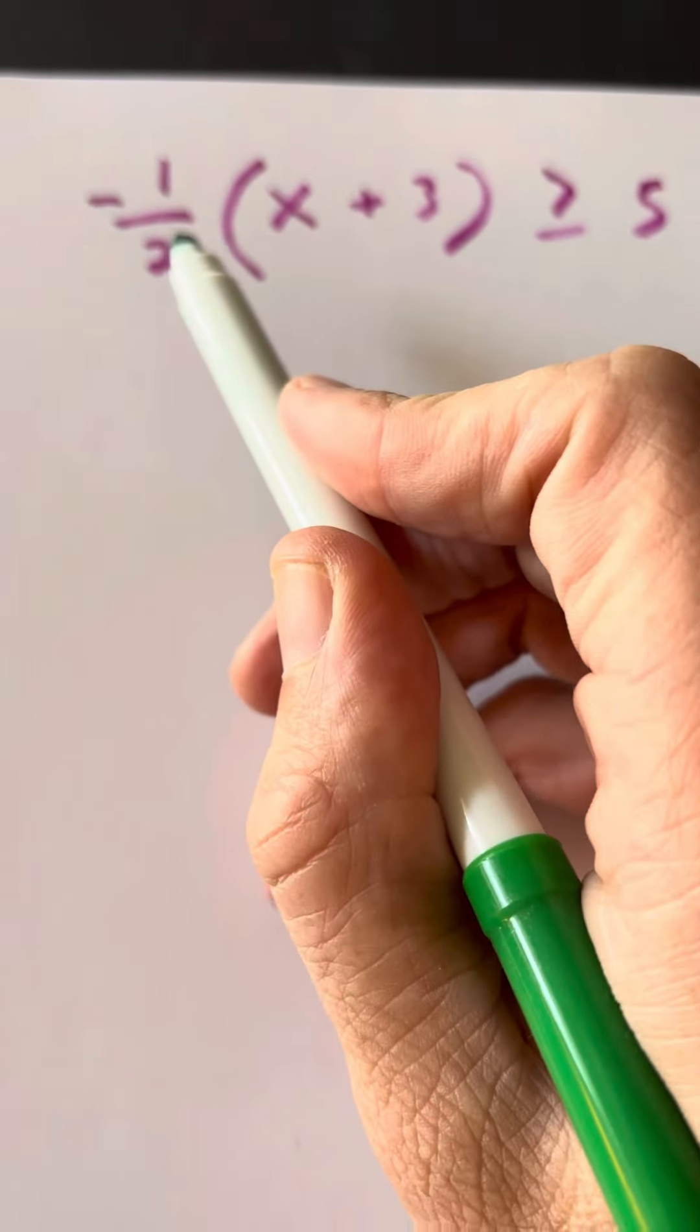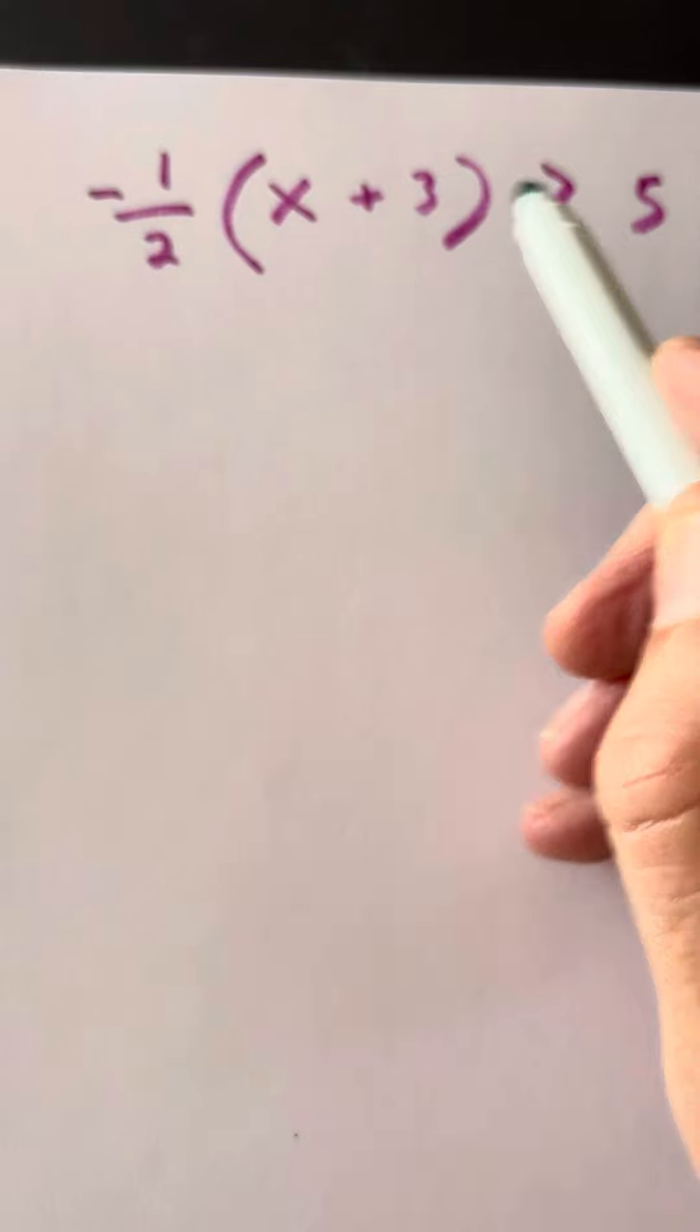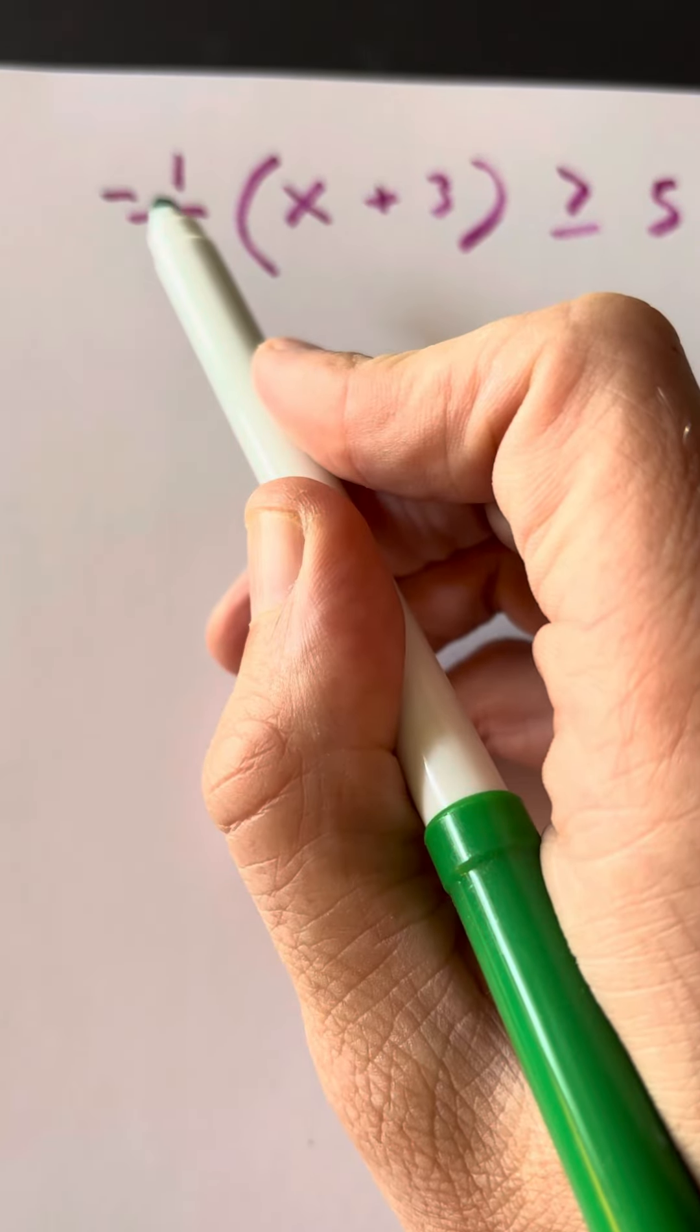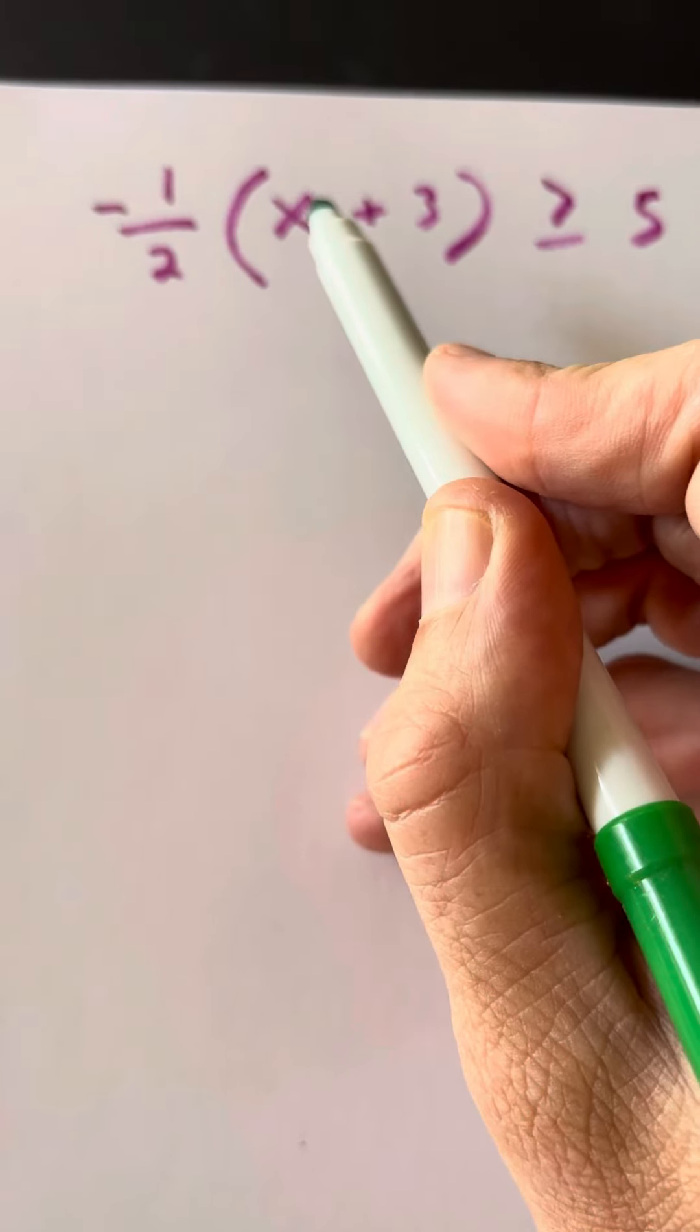We have negative 1/2 times x plus 3 is greater than or equal to 5. So this is a factor of negative 1/2. This is a factor of x plus 3.